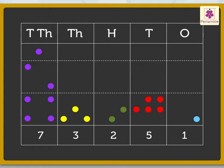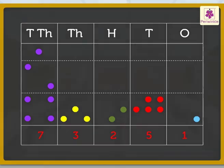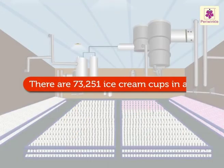Lastly, one purple dot plus two purple dots plus four purple dots is equal to seven ten thousands. In all, we get 7 ten thousands, 3 thousands, 2 hundreds, 5 tens and 1 one, which means 73,251. Thus, there are 73,251 ice cream cups in this section.